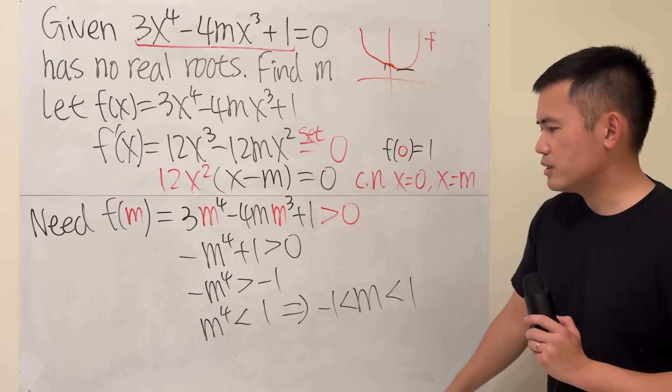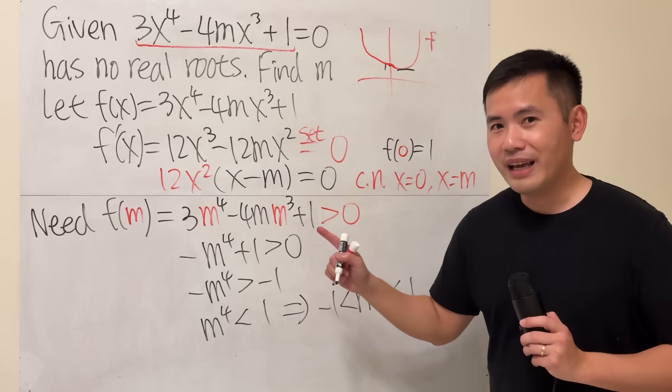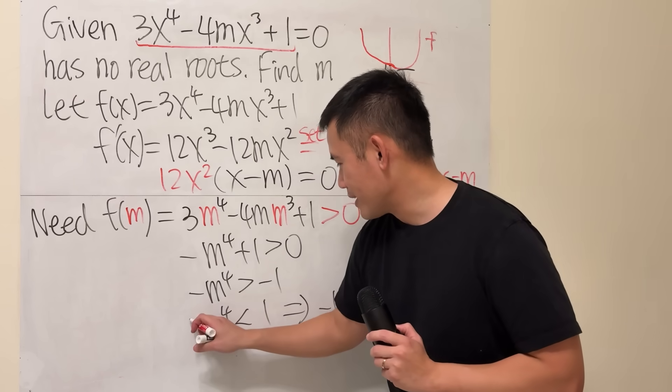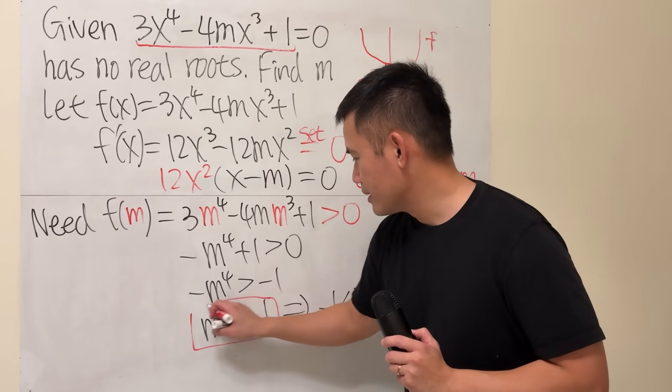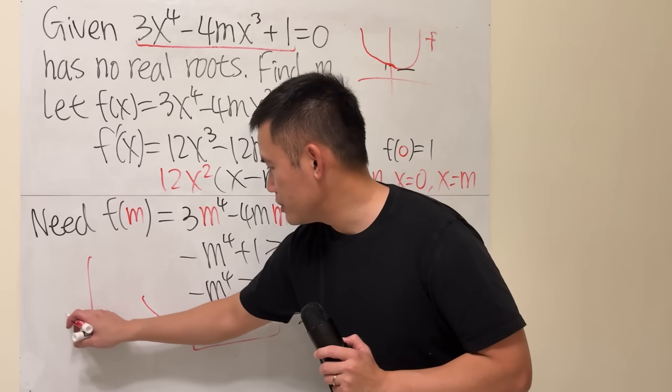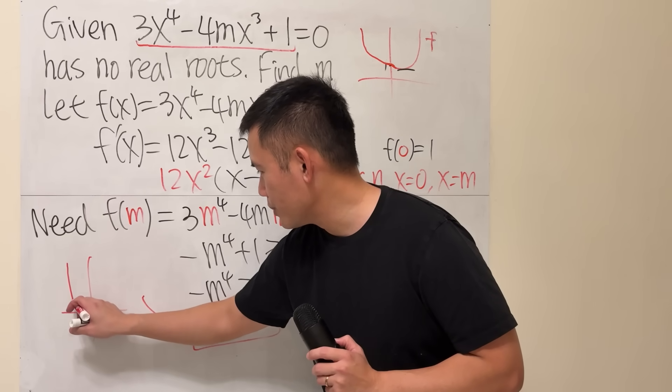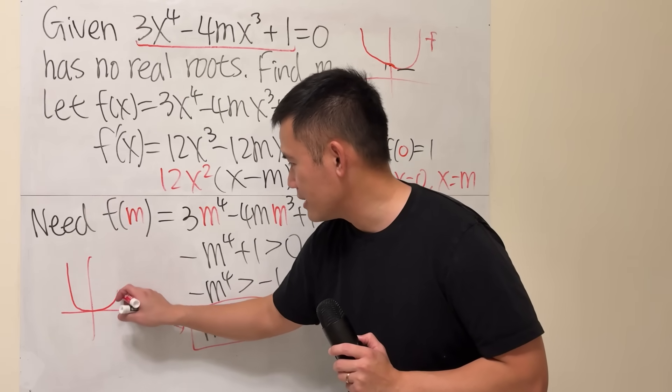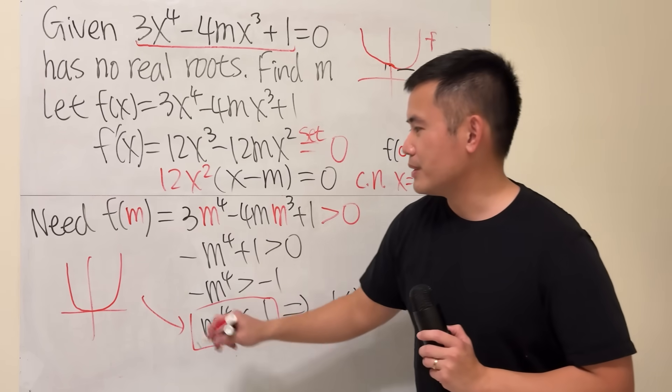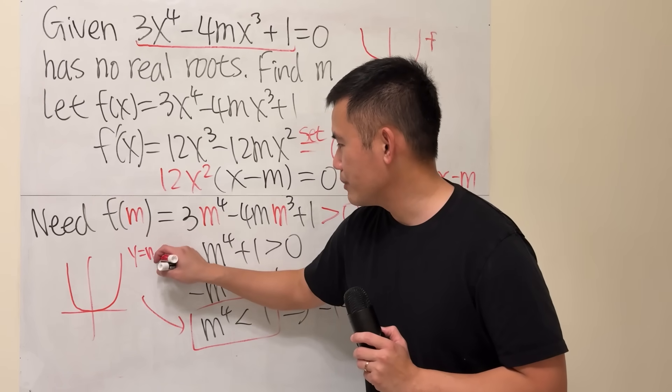The quick way to see is to look at the graph for m to the fourth power. Imagine you have m to the fourth power, it will look like this, slightly more flat than x squared. This is y equals m to the fourth power.